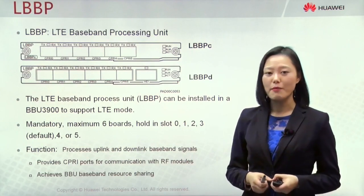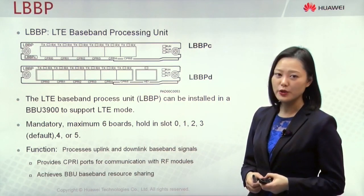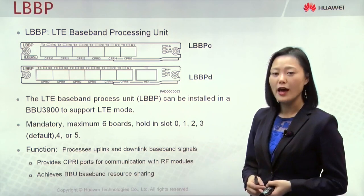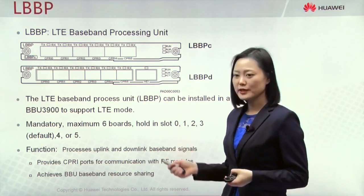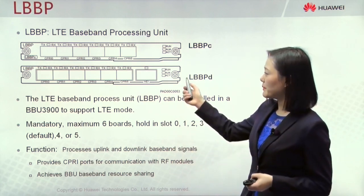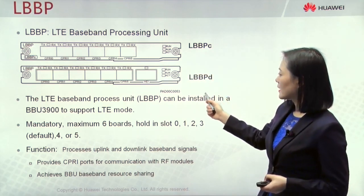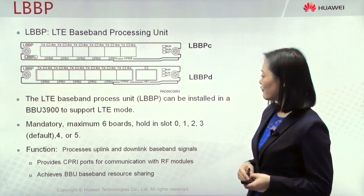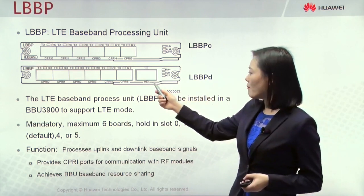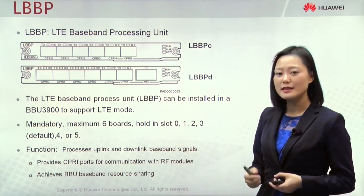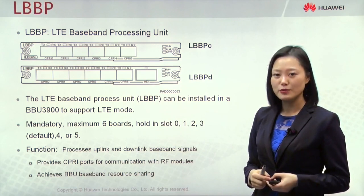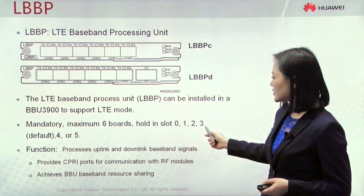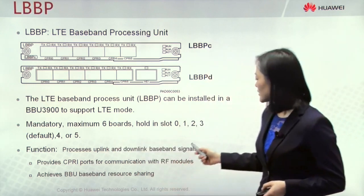Now let's check another important board — the BBP, which is also a mandatory board. It divides into LBBP and UBBP. The LBBP is only used in LTE mode and can only be installed in BBU-3900. There are two series of LBBP boards: LBBP-C and LBBP-D. From the front panel, they all have six CPRI interfaces to connect with RF units. The LBBP-D has one additional HEI port to connect with another BBU's BBP board for baseband resource sharing. The BBP board can be installed in Slots 0 through 5, with Slot 3 as priority.